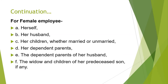Similarly for female employees, family means herself, her husband, her children whether married or unmarried, her dependent parents, the dependent parents of her husband, and the widow and children of her predeceased son. At the time of death or disablement, these family members are entitled to claim the gratuity amount on behalf of the actual employee.